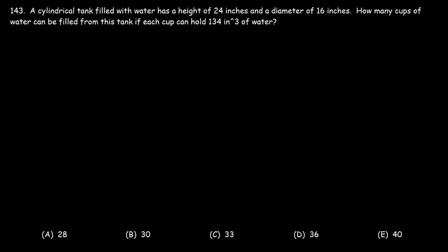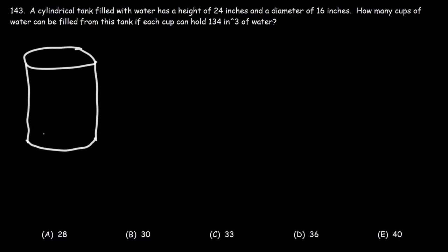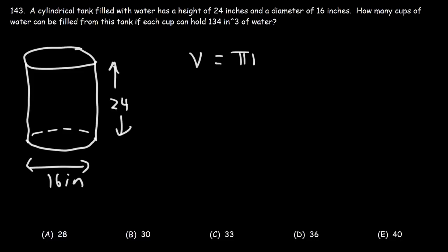Number 143. A cylindrical tank filled with water has a height of 24 inches and a diameter of 16 inches. How many cups of water can be filled from this tank if each cup holds 134 cubic inches of water? Let's draw a picture of this cylindrical tank.